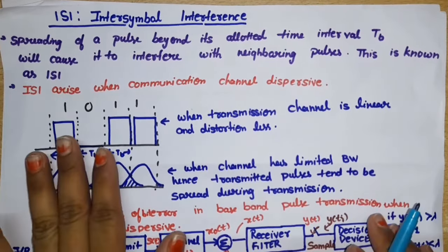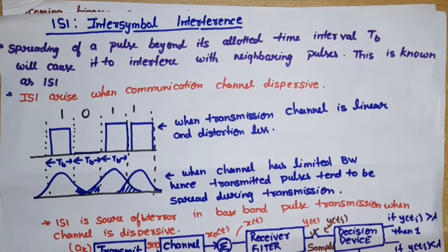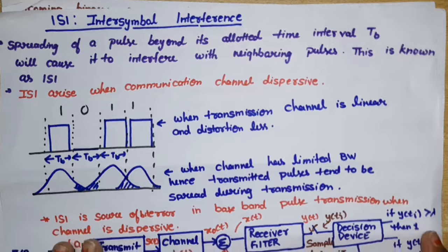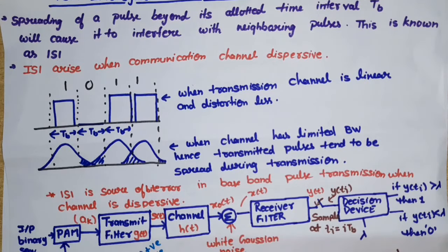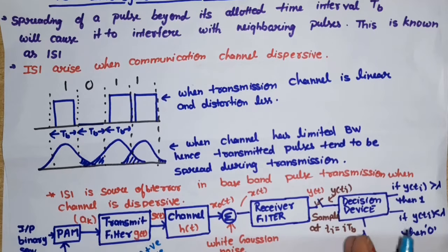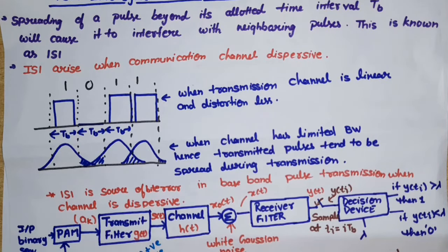Now, to understand the whole process, the best example is the baseband binary PAM system. First, what is baseband? There are two types of transmission: baseband and passband. In baseband transmission, the modulating signal is transmitted without modulation. In passband, the modulating signal is transmitted after modulation. We take Pulse Amplitude Modulation (PAM) as our example since it is the best baseband modulation technique.